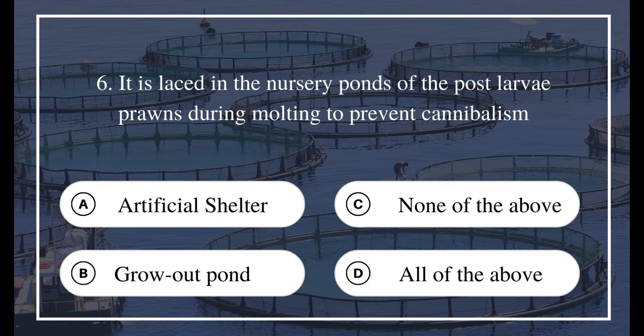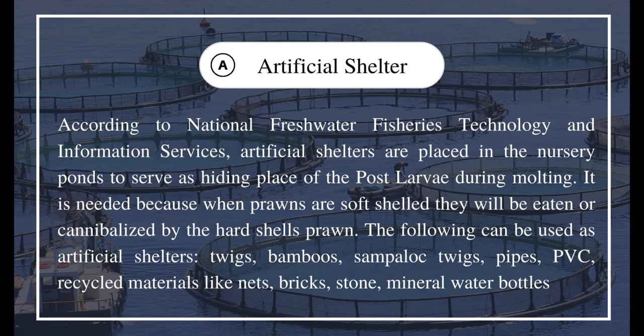Question 6: It is placed in the nursery ponds of post larvae prawns during molting to prevent cannibalism. A) artificial shelters, B) grow-out pond, C) none of the above, D) all of the above. The answer is A) artificial shelters. According to the National Freshwater Fisheries Technology and Information Services, artificial shelters are placed in the nursery ponds to serve as hiding places for the post larvae during molting.